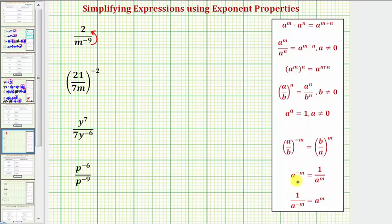The property we're applying here is given at the bottom. One divided by a to the power of negative m equals a raised to the power of m. So notice in fraction form, this would be over one. So this is equal to two times m raised to the power of positive nine.